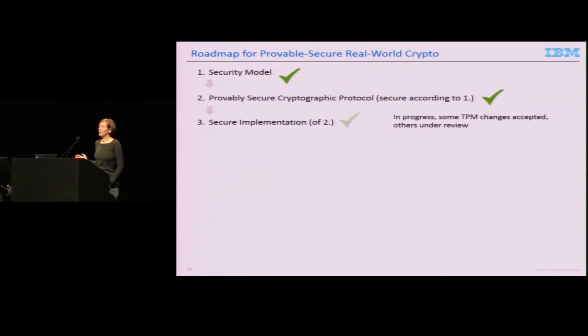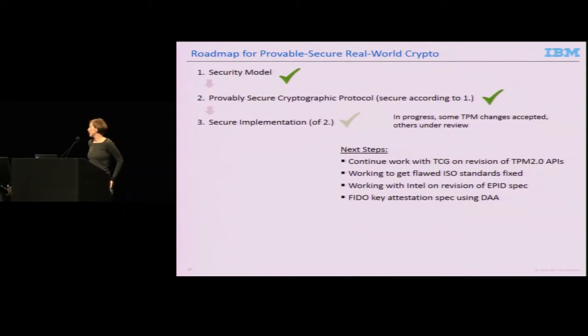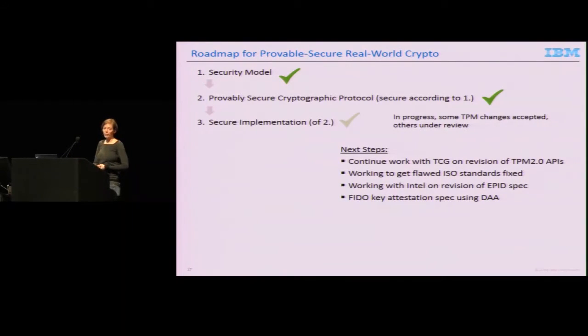We're finally done with our roadmap, or let's say we're in the progress of being done with the roadmap. Getting those changes into the real world is a long and slow process. Some of those changes have been accepted in the review and hopefully will be accepted soon. The next step is we continue to work with the TCG to hopefully make sure the TPM interfaces are revised. We're also in contact with ISO and with Intel to make sure other specifications of the protocol that are flawed are fixed as well. We also made a FIDO attestation using DAA that I can talk offline if you're interested.